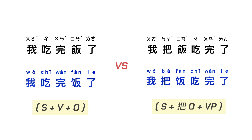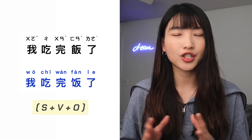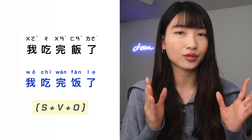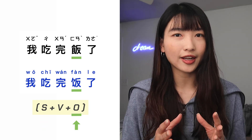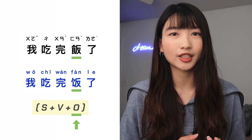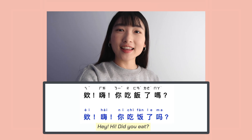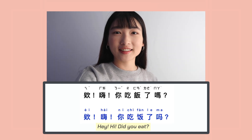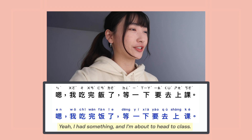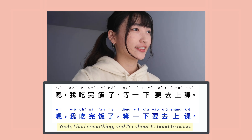For example, let's take a look at the difference between 我吃完饭了 and 我把饭吃完了. When you say 我吃完饭了, we pay attention to the subject and what the subject did. The object, however, is not so important. In this conversation, the focus is on talking about what the person did, and there isn't a certain object that they want to talk about.